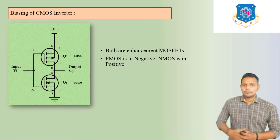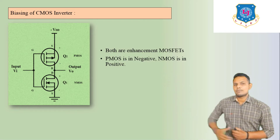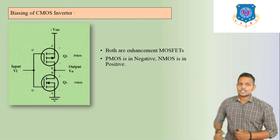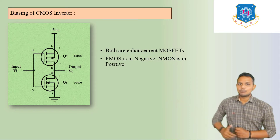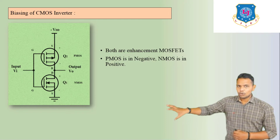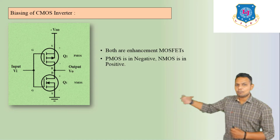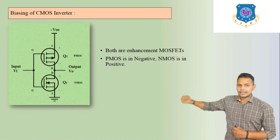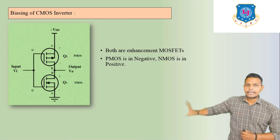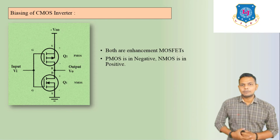This is the biasing of the CMOS inverter. Both are enhancement MOSFETs. We have PMOS Q2 and NMOS Q1. Q2's positive terminal is connected to +VDD and its negative terminal is connected to the output VO. Q1's positive terminal is connected to VO (the output) and its negative terminal is connected to ground. Q1's positive and Q2's negative terminal are both connected at the output. The gate terminal is commonly taken from the input side.